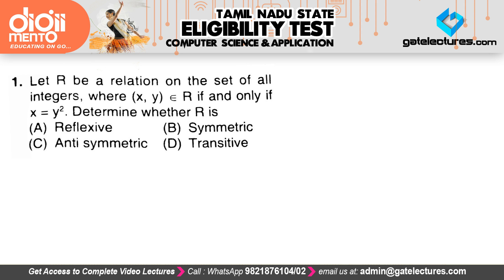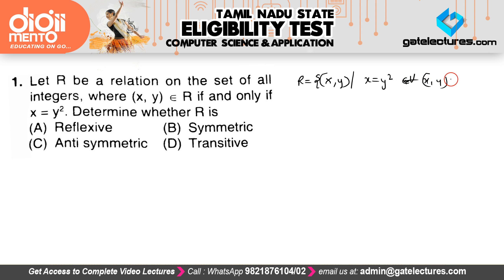The first question says: let relation R be a relation on the set of all integers, where (X, Y) belongs to R if and only if X equals Y squared. So we have relation R defined such that the pair (X, Y) can be in R if and only if X equals Y squared, for all elements (X, Y) belonging to a set A. We have to determine whether this relation is reflexive, symmetric, anti-symmetric, or transitive.